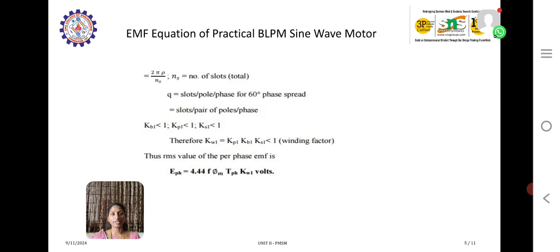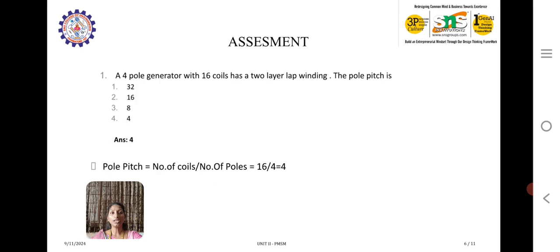In which Ns is the number of slots, q is slots per pole per phase of 60 degrees. When Kd1 is less than 1, Kp1 less than 1, and Ks1 is less than 1, the winding factor also will be less than 1. Thus RMS value of per phase EMF is E phase equals 4.44 F I M t phase into winding factor.